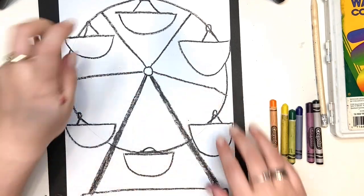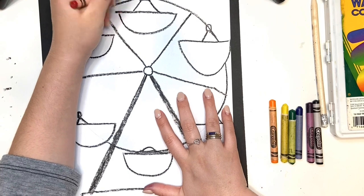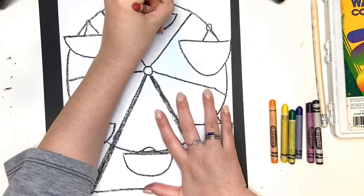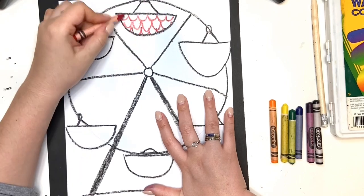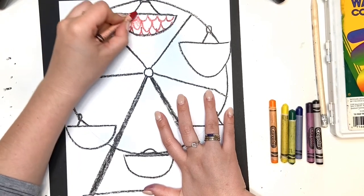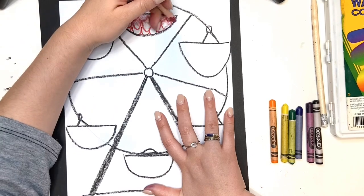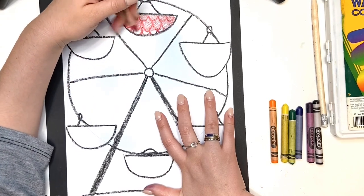Alright. Time to color in our color wheel. I'm going to start with red at the top. And after doing a pattern where I'm pressing down really hard with my red crayon, I'm going to go lighter over top so you can still see the pattern.